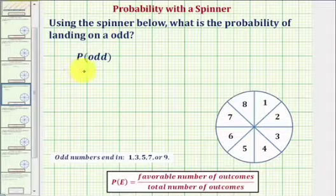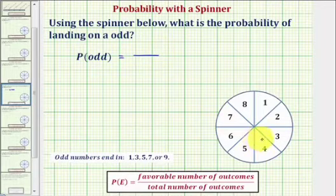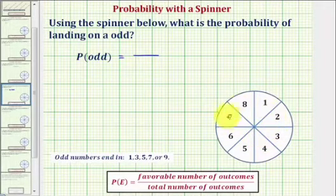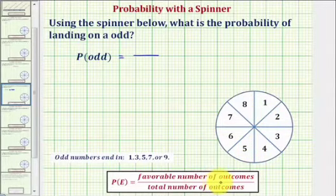So for the probability of spinning an odd, let's first determine the total number of outcomes. Looking at our spinner, notice how it's divided into eight equal-sized sections, each section numbered from one through eight, and therefore there are eight total possible outcomes.